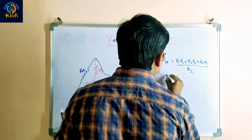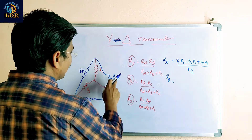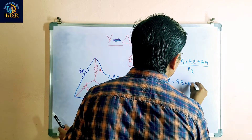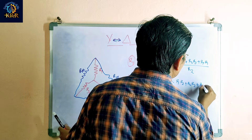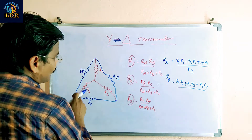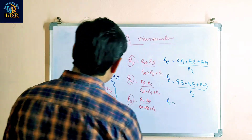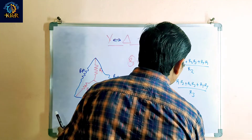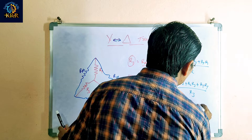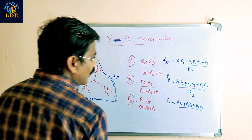Next, Rb. Rb equals R1 R2 plus R2 R3 plus R3 R1, divided by the quite opposite resistance. For Rb, the quite opposite resistance is R3. Then Rc equals R1 R2 plus R2 R3 plus R3 R1, divided by the quite opposite resistance, which is R1.